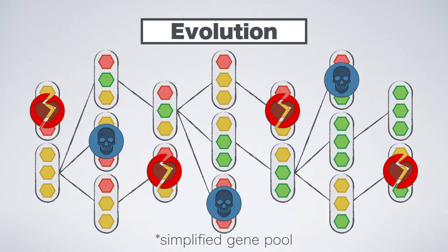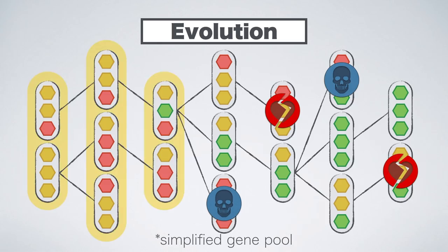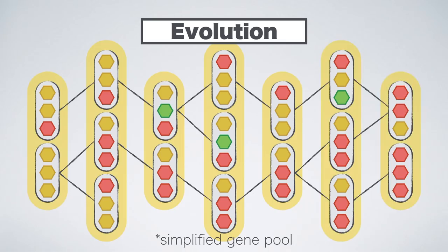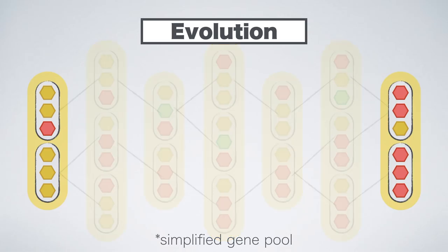But first things first: if we remove selection pressures, we unintentionally help the bad gene mutations stay around. And because bad gene mutations are more frequent, they will outnumber the good ones in each successive generation. Compounding these disadvantages over time will make us end up with a clear gene pool decline.